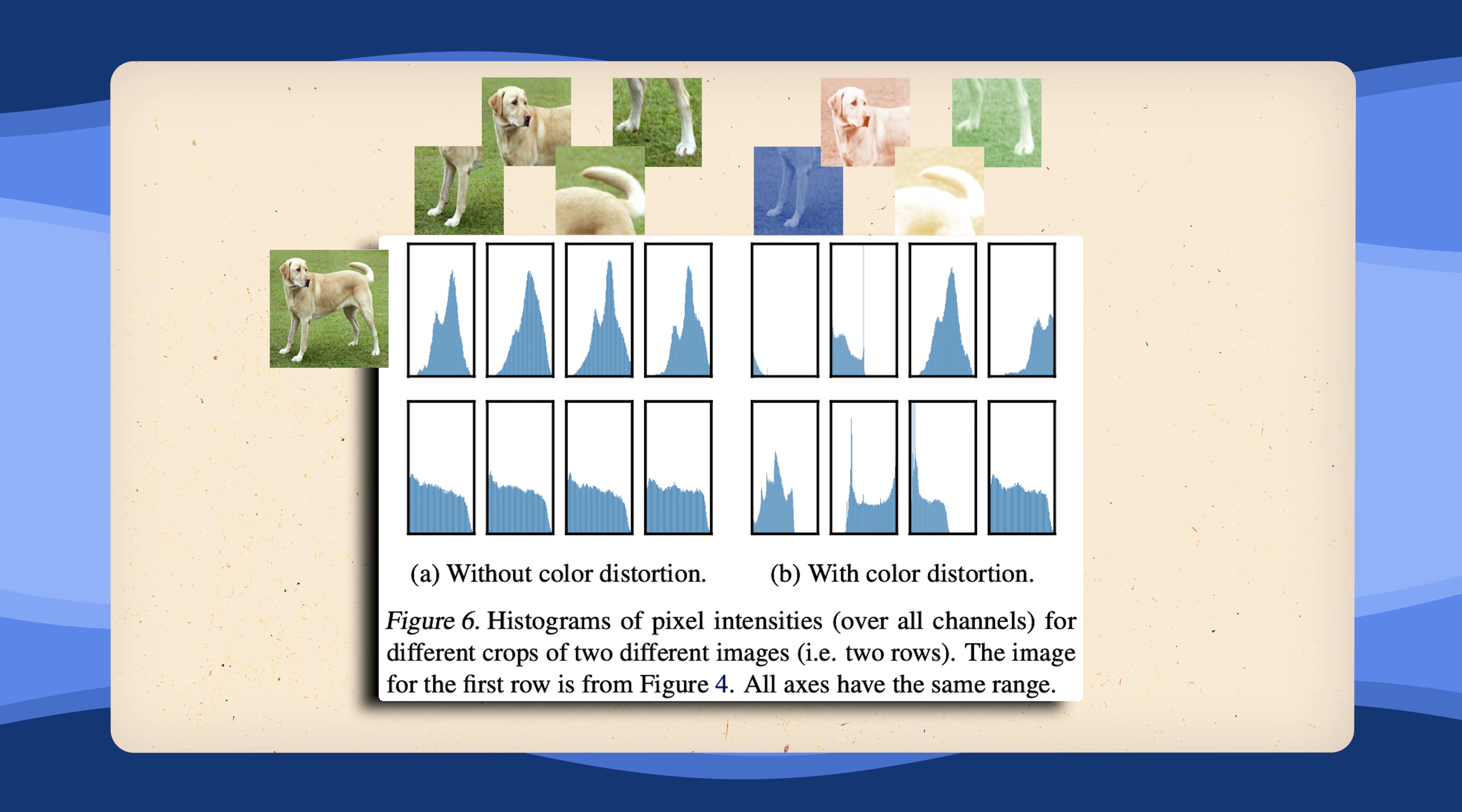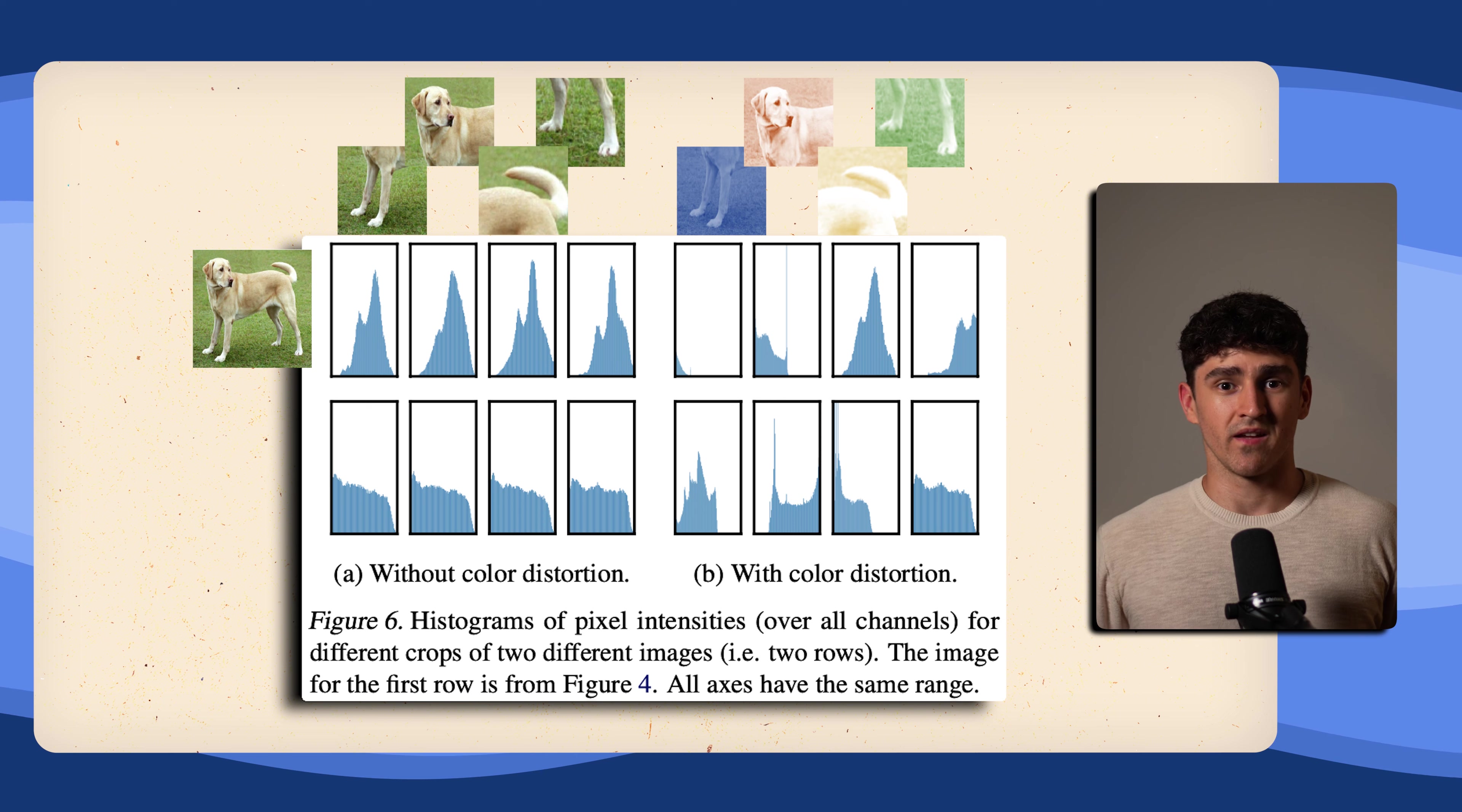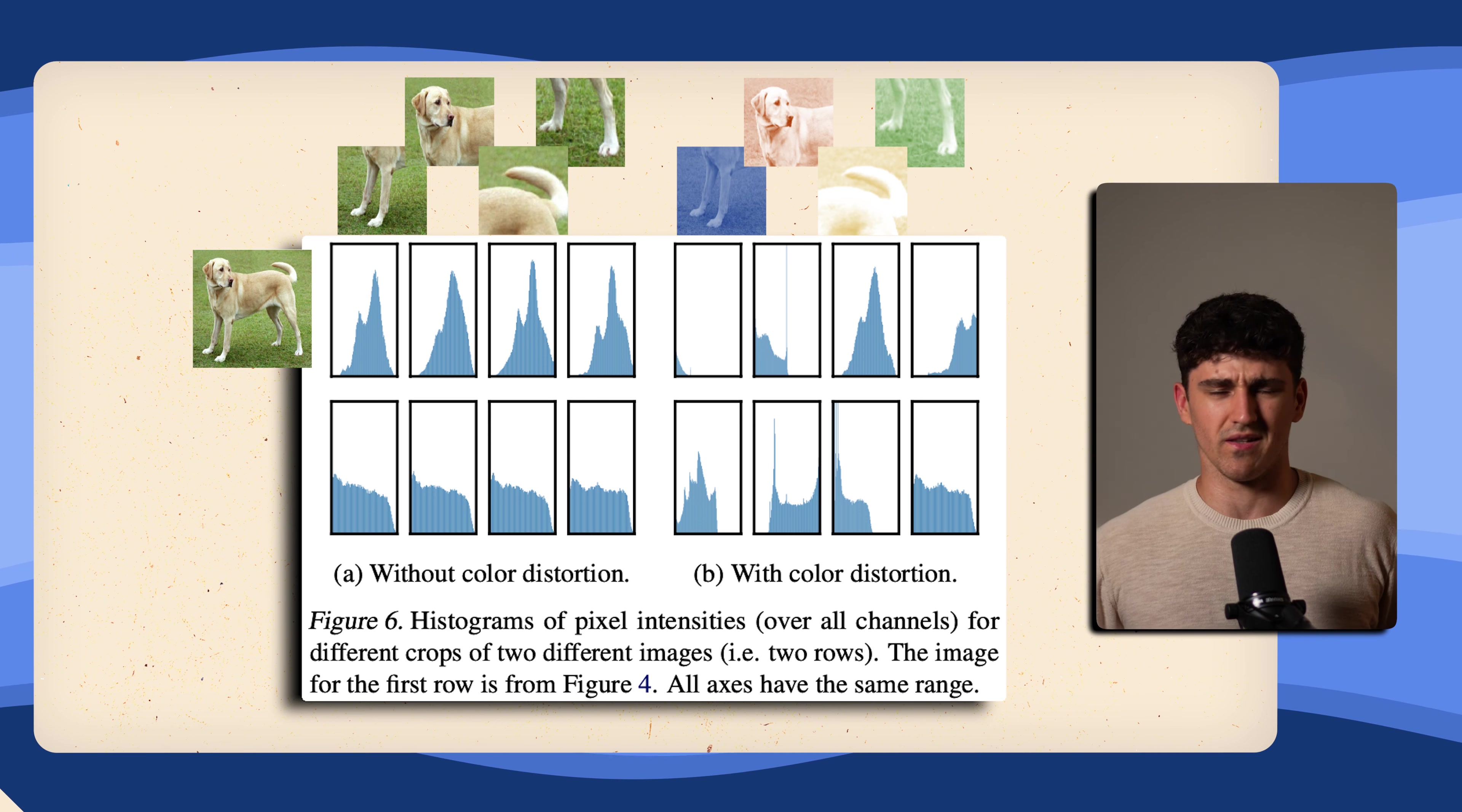If we now apply random color distortions to the crops or different views, we can see that the histograms are completely different. It's somewhat like forcing a child to learn to solve math problems without a calculator. That way, it must learn the underlying rules and patterns of math to solve the problem instead of simply learning to use the calculator.